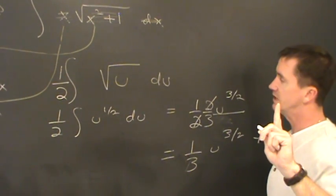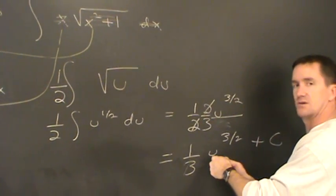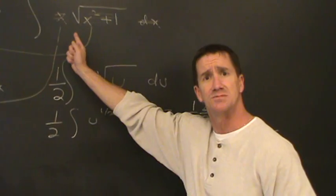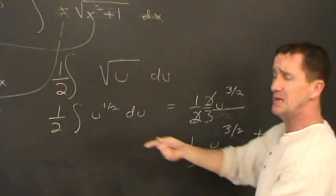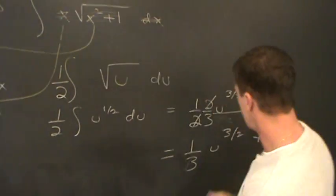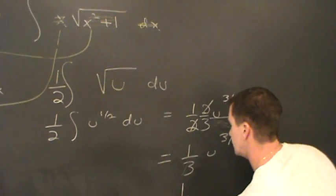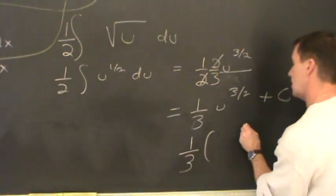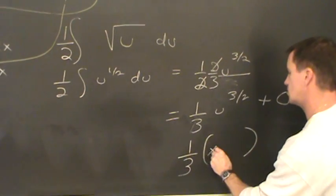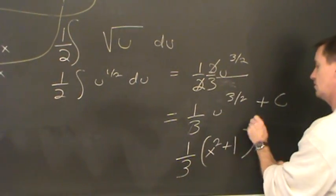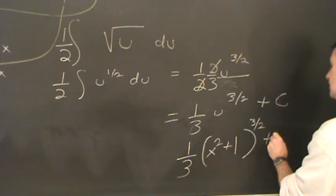But one more thing: resubstitute. Everyone, this is in terms of u. Remember, the original problem was in terms of x. So just go back to the beginning. What did you let u equal? x squared plus one. Just put it back, resubstitute. Final answer: one third times (x squared plus one) raised to the three halves plus C.